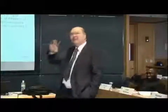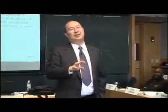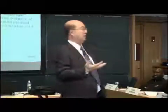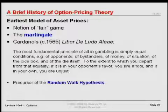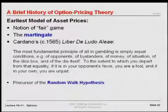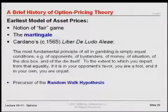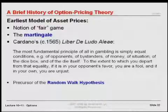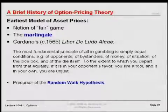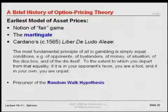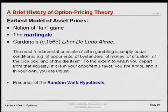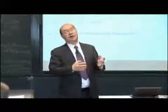Cardano also wrote a book on gambling titled Liber De Ludo Alea — The Laws of Gambling — in which he developed what was the precursor to the modern mathematical description of stock prices. He described it this way: the most fundamental principle of all in gambling is simply equal conditions — of opponents, of bystanders, of money, of situation, of the dice box, and the die itself. What he was describing was essentially a 50-50 bet, or what we call a fair game, or what is now known as a martingale.